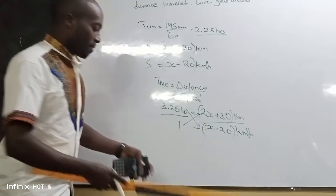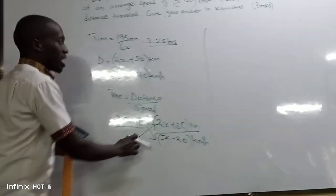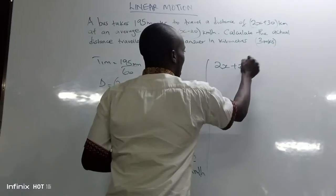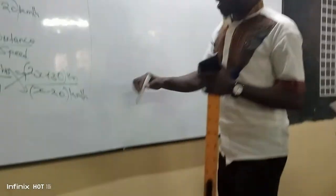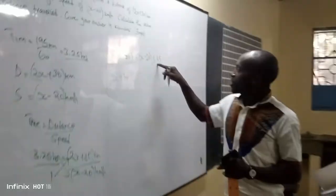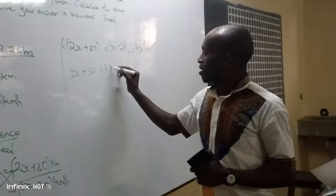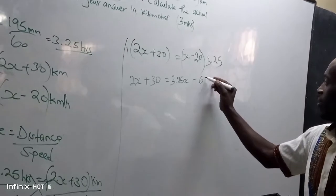When we cross multiply, we get 2x plus 30 multiplied by 1, which equals x minus 20 multiplied by 3.25. Multiplying by 1 gives us: 2x plus 30 equals 3.25x minus 3.25 times 20. And 3.25 multiplied by 20 equals 65.